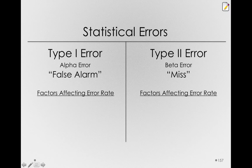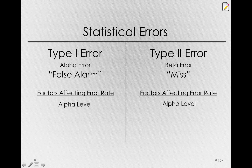Let's look at the factors affecting each of these error rates. One factor is in common for both of these errors: the alpha level will affect your type 1 error rate if the null hypothesis is true, and the alpha level will affect your miss rate if the null hypothesis is false. On the type 1 error side, we're actually done — there is only one thing that affects your false alarm rate, and that is your chosen alpha level. That's why we're statistically comfortable when we reject the null hypothesis; at least if our assumptions are met, the only thing that affects our false alarm rate is our chosen level of alpha.